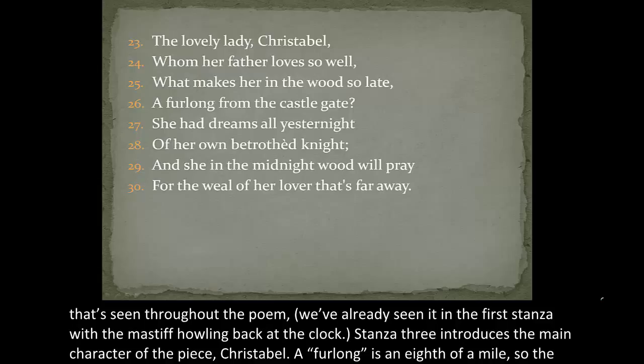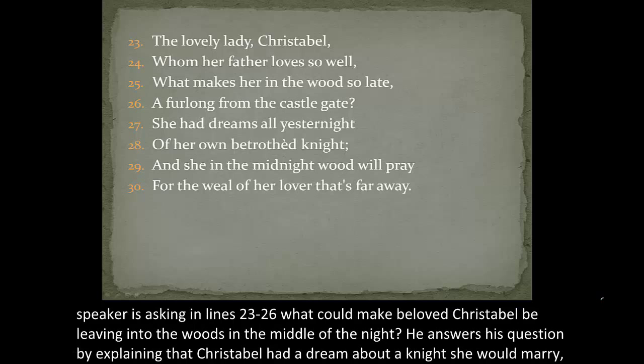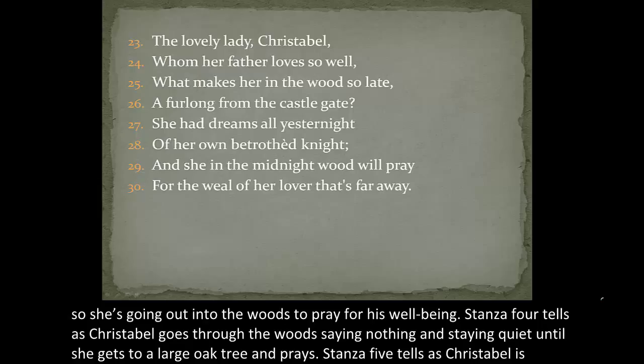Stanza three introduces the main character, Christabel. A furlong is an eighth of a mile, so the speaker in lines 23 through 26 is asking what could make beloved Christabel be leaving into the woods in the middle of the night. He answers his own question by explaining that Christabel had a dream about a knight she would marry, so she's going out into the woods to pray for his well-being.